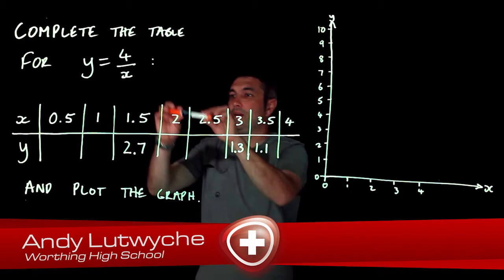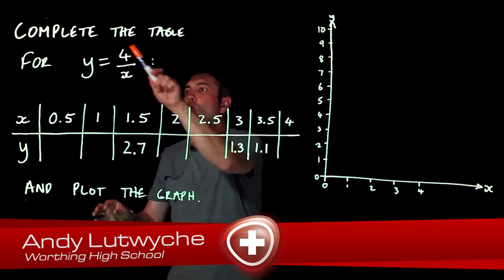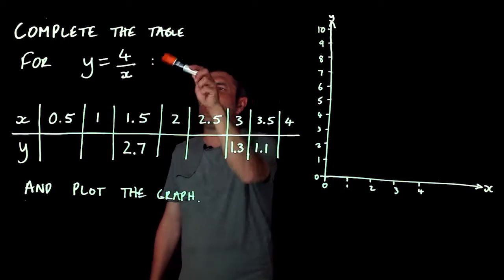In this question we're asked to complete this table and plot the graph for y equals 4 over x.